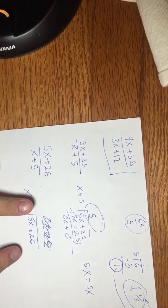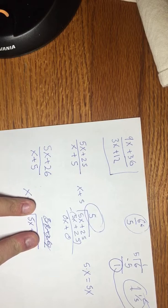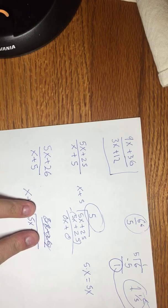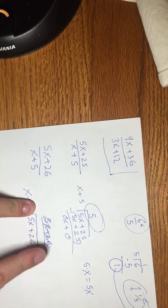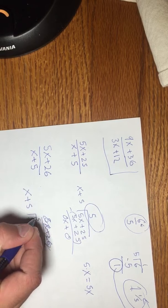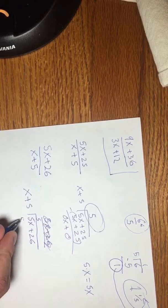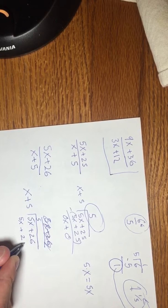Sorry. 5x plus 26 divided by x plus 5. Remember, same thing. We're going to cover up the second numbers and we're just going to look at the first ones. How many times does x go into 5x? Well, it's the same thing, 5 times. So let's try that now.